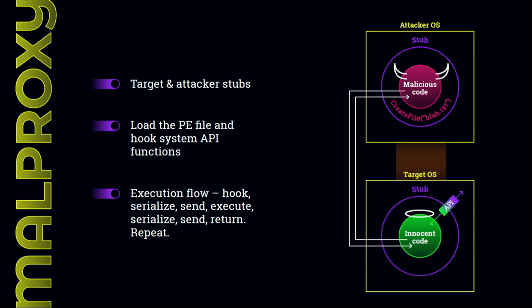Let's take CreateFile as an example. Our malicious code calls it, and Malproxy captures that call and creates a detailed message for the target side containing the CreateFile function name and the path 'blood.ext'. Malproxy sends this message to the target side, which parses it and executes CreateFile. After the call, the OS returns the file handle, Malproxy sends this handle back to the attacker side, and as far as the malicious code is concerned we now have a valid handle to blood.ext.